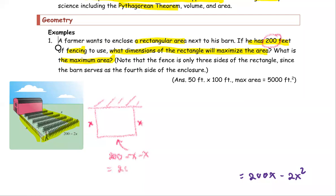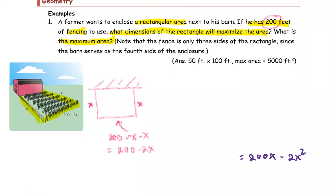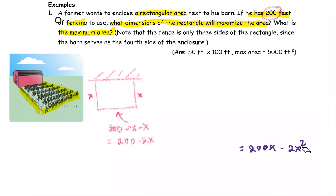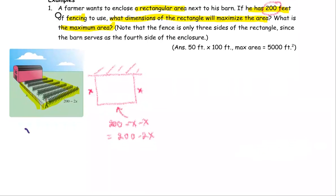With the restriction that X is going to be greater than or equal to zero, which is one dimension, and the other dimension, which is the length 200 minus 2X, must be greater than or equal to zero as well, because the measurement must be a non-negative number.